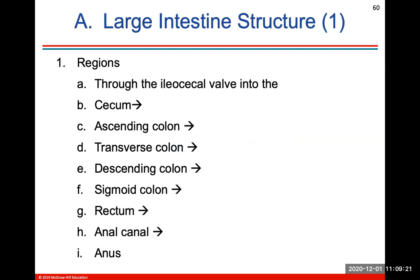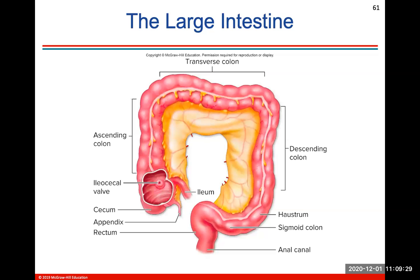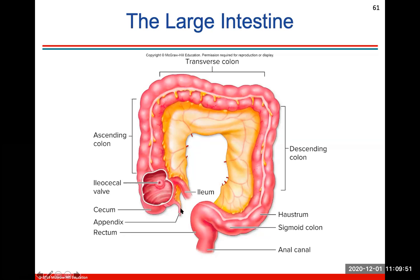The large intestine has several regions — take some time to review the large intestine anatomy, including the ascending, transverse, and descending colon. A haustrum or haustra is a segment, and the teniae coli is a smooth muscle line that helps to project things along. The appendix has no known use, but if it gets inflamed or bursts it could be dangerous. The sigmoid colon is the S-shaped part before the rectum and the anal canal.